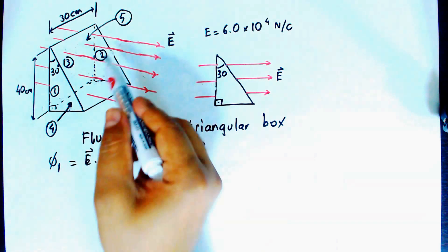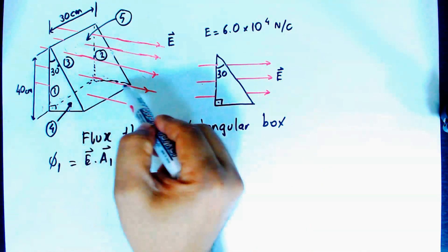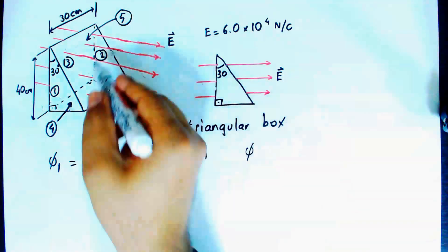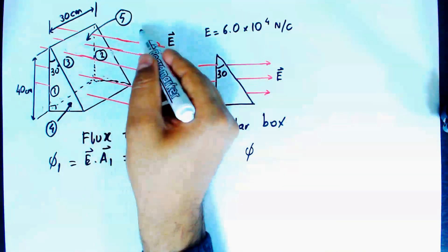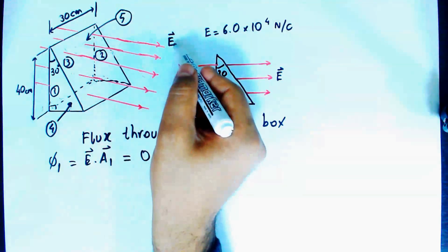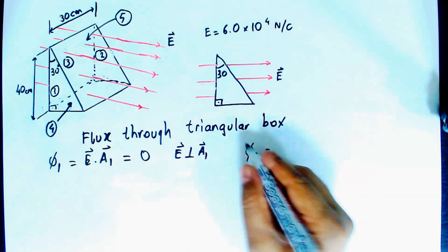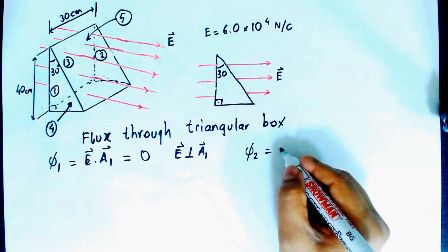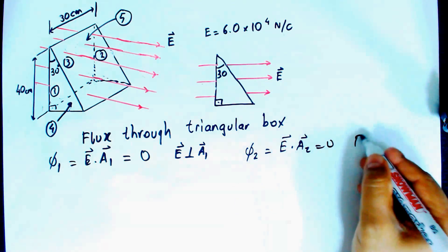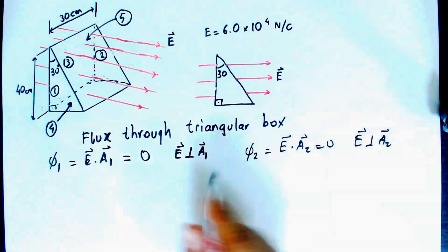For face two, the equivalent triangular face, the area vector again makes a right angle with the electric field. So flux two, which is E dot A₂, is also zero because the electric field and area vector two are perpendicular to each other.